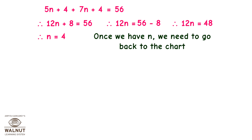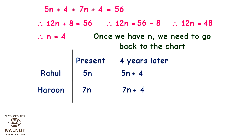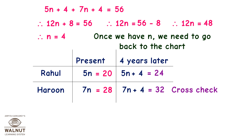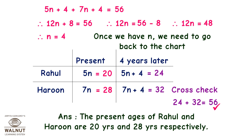Once we have n, we go back to the chart. Rahul's present age is 5n equals 5 into 4 equals 20. Haroon's present age is 7n equals 7 into 4 equals 28. In 4 years Rahul will be 24 and Haroon will be 32. Cross check: 24 plus 32 equals 56. Therefore the present ages of Rahul and Haroon are 20 years and 28 years respectively.